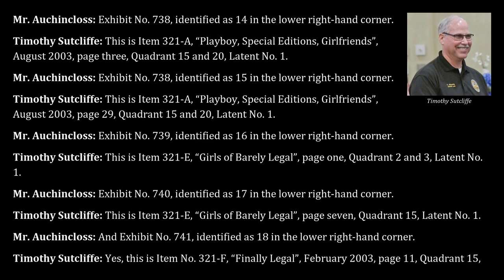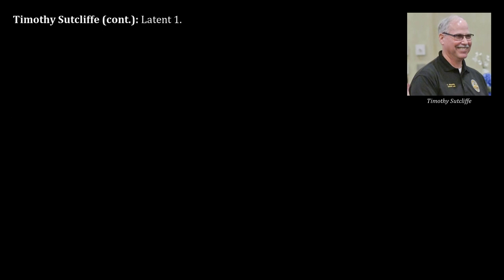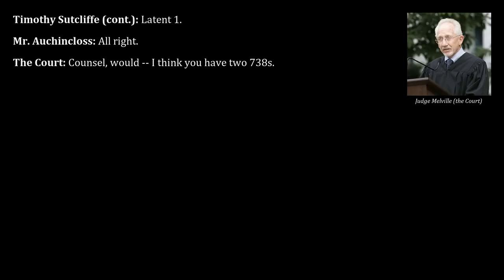Exhibit 740 is item 321E, Girls of Barely Legal, page 1 quadrant 2 and 3, latent 1. Exhibit 741 is the same item, page 7 quadrant 15, latent 1. The final card covers item 321F, Finally Legal, February 2003, page 11 quadrant 15, latent 1.